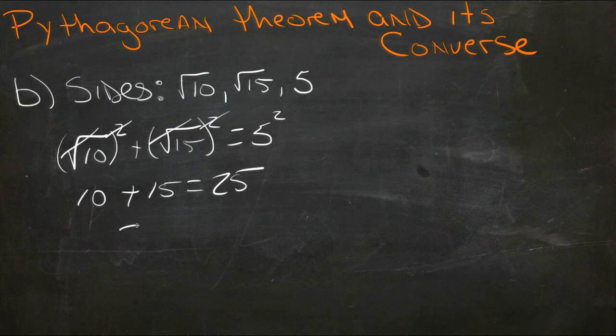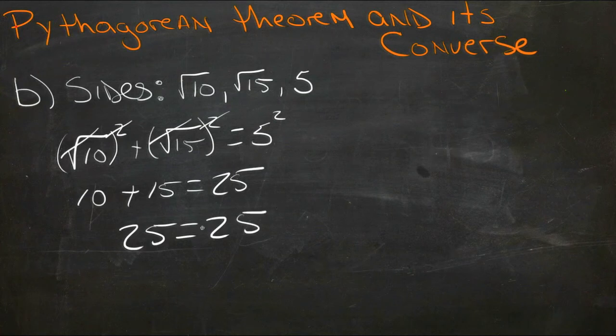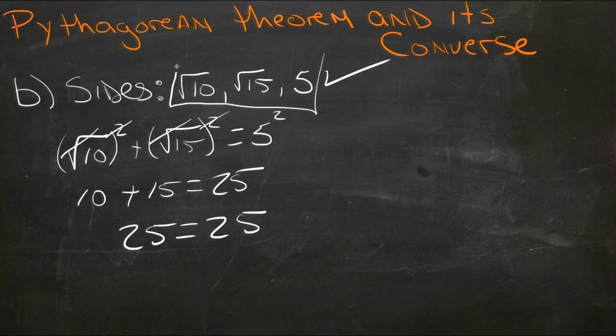10 plus 15 does equal 25, and the other side was already 25, so we have a true statement, which means that these three sides are three sides of a right angle triangle.